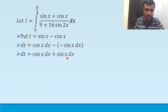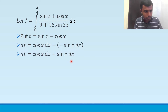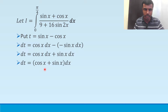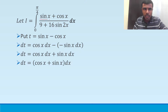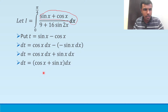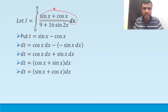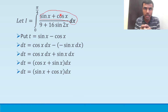Taking dx common, I get (cos x + sin x) dx. If you see the numerator I have sin x + cos x into dx, which is the same as cos x + sin x into dx. So instead of this entire numerator — sin x + cos x into dx — I can write it as dt.